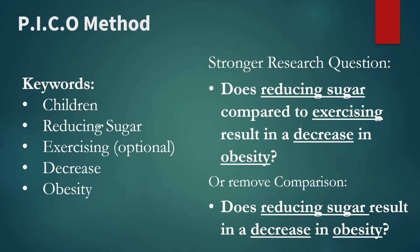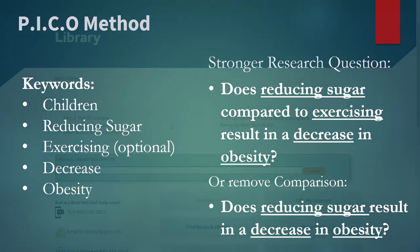Our keywords are: children, reducing sugar, exercising, decrease, and obesity. That creates a much stronger research question: does reducing sugar compared to exercising result in a decrease in obesity? If we want to remove the comparison, we can simplify it to: does reducing sugar result in a decrease in obesity?